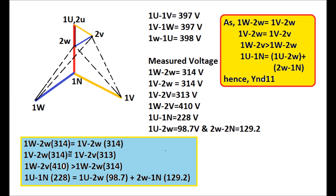Three-phase supply has been given to 1U, 1V, and 1W. The phase-to-phase voltages are: 1U–1V = 397V, 1V–1W = 397V, and 1W–1U = 398V. The measured voltages are: 1V–2W = 313V, 1W–2V = 410V, and 1U–1N = 228V.